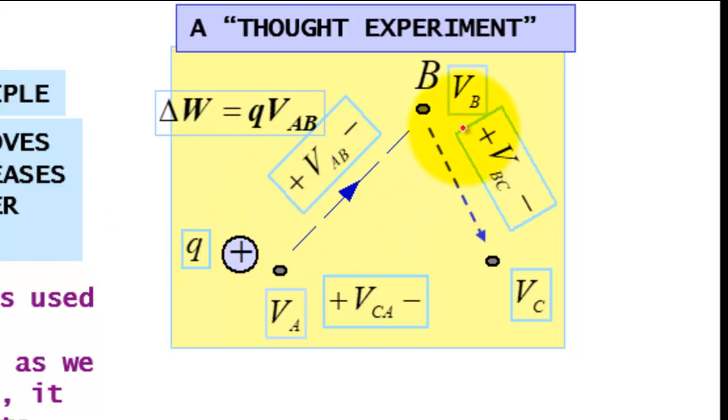The energy or work done is Q into the voltage between A and B. Next, the work done from B to C is Q times VBC, because this is positive sign. Loses energy, loss, and this is gain energy.